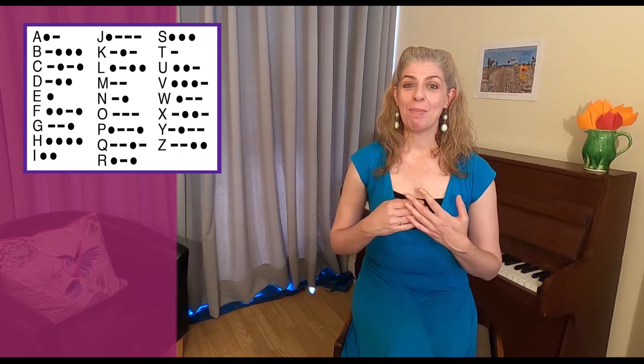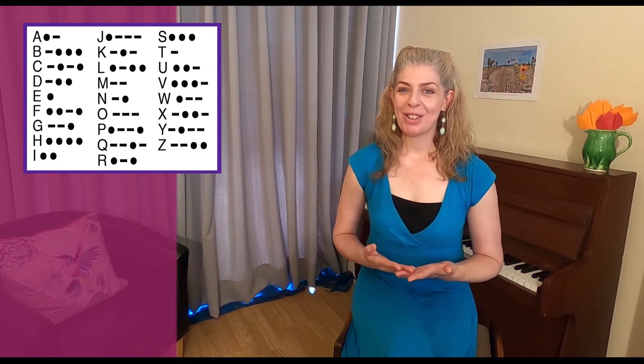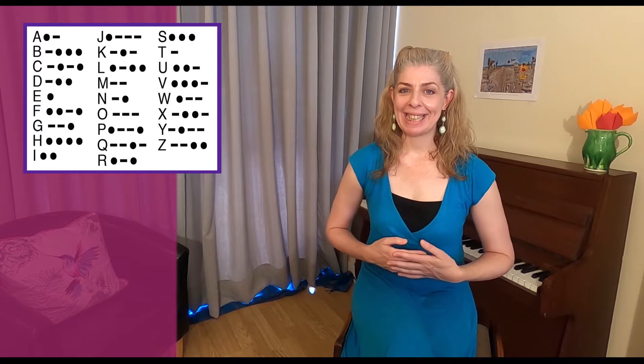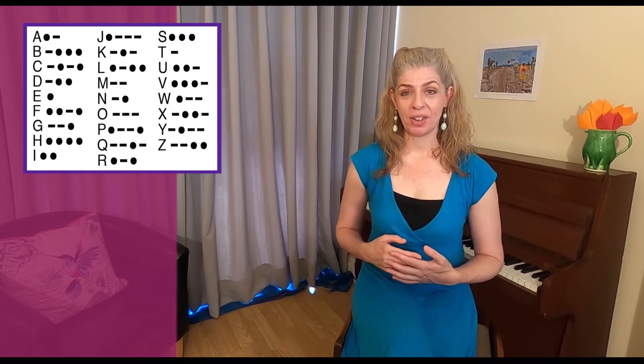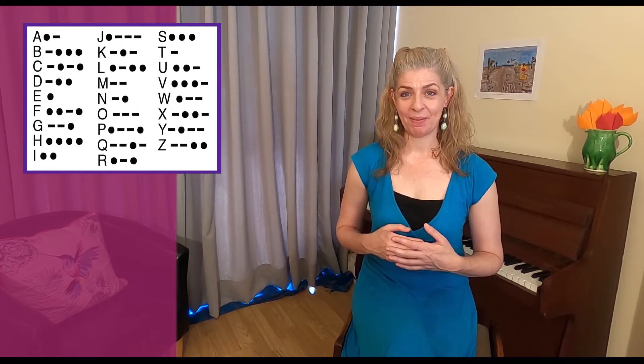So for example, the most used letter in the alphabet is E and it's represented by just one single dot, and the least used letter Z is a longer combination using two dashes and two dots. This makes letters and words which are used more often quicker to send.